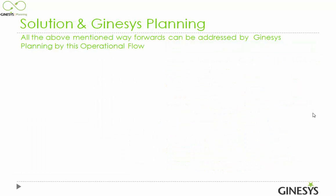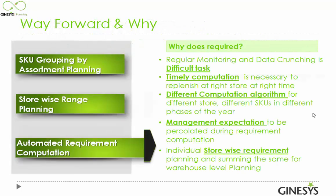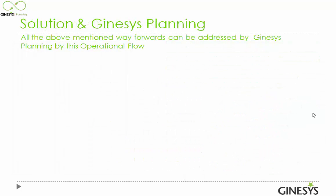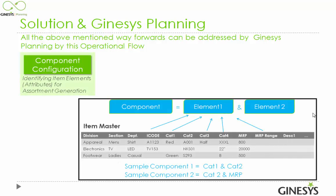Now it comes to Genesis Planning — these are the problems we have discussed, and now we will see how Genesis Planning can solve these issues through its operations. Genesis Planning has different layers. The first is component configuration. A component is a different combination of different elements.